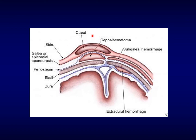To understand the different birth injuries concerning the skull, we find that the caput starts here — it is under the skin, just beneath the skin. The cephalohematoma is a subperiosteal lesion; it does not cross any bone and does not cross the midline. And here is the subgaleal hemorrhage, which is under the fascia or the galea aponeurosis.